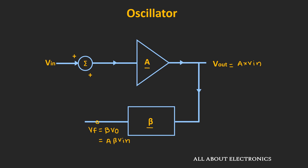Now let's say this feedback signal is getting added to the input signal, and at the same time the input signal is removed from the circuit. So now the feedback signal Vf will act as the input for this amplifier. Whether we will get sustained oscillations or not after removing the input voltage depends upon the product of A and beta, known as the loop gain of the oscillator.